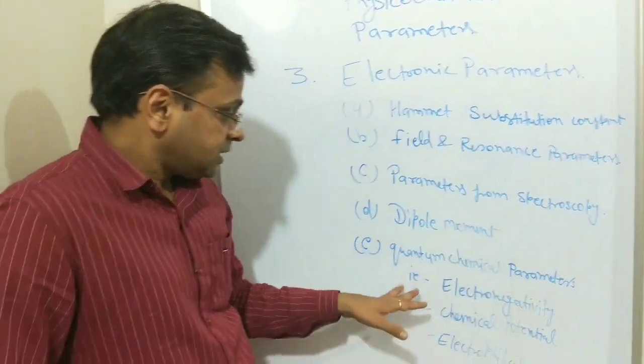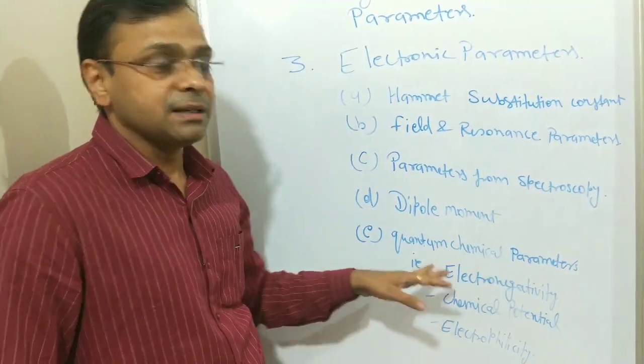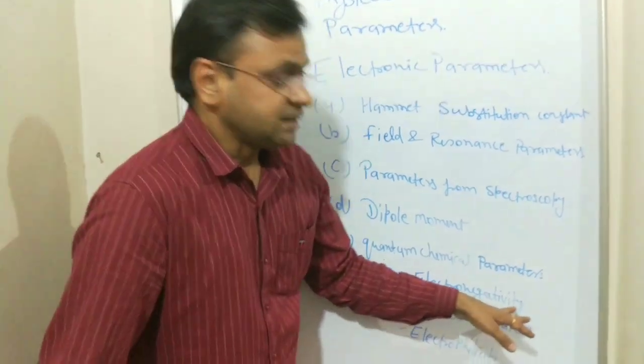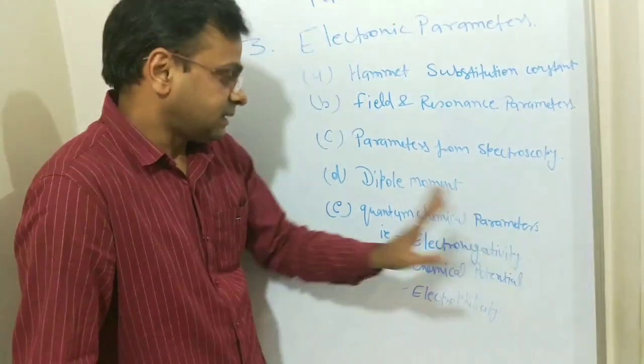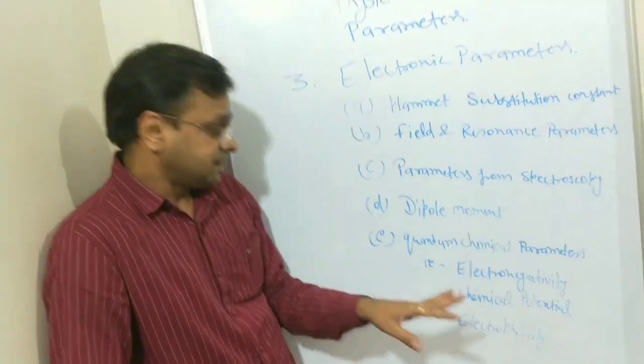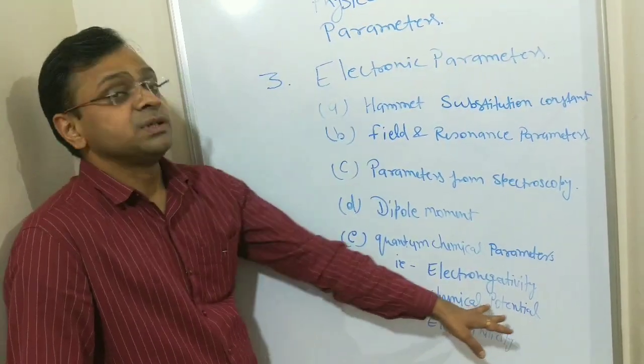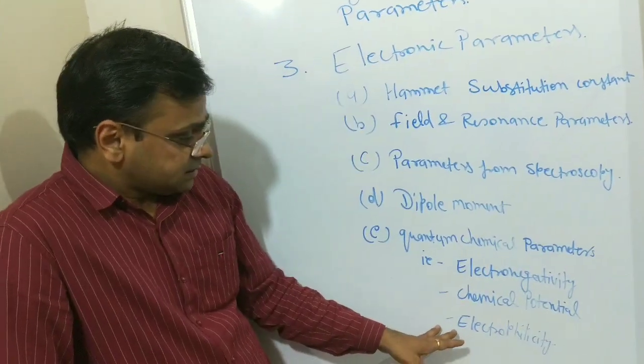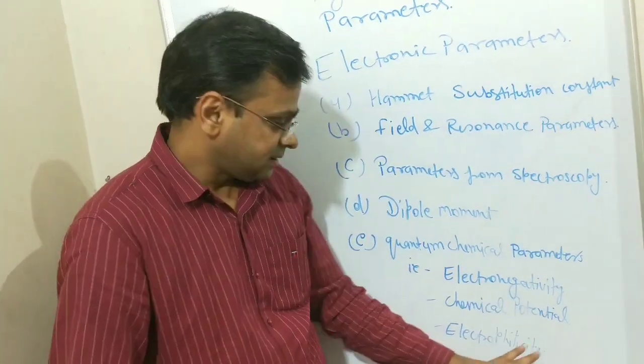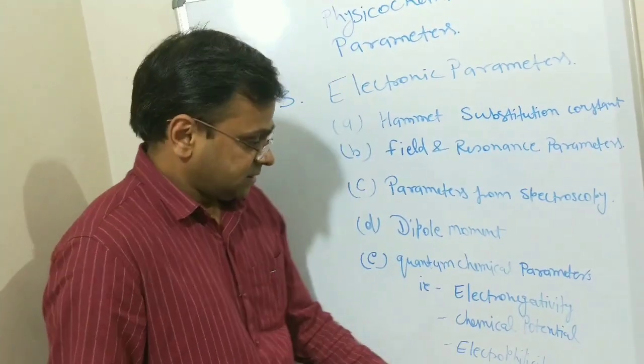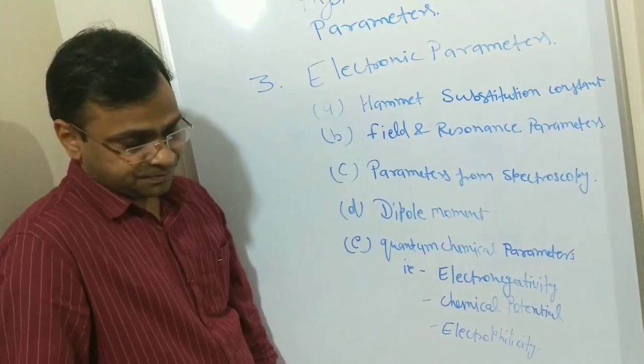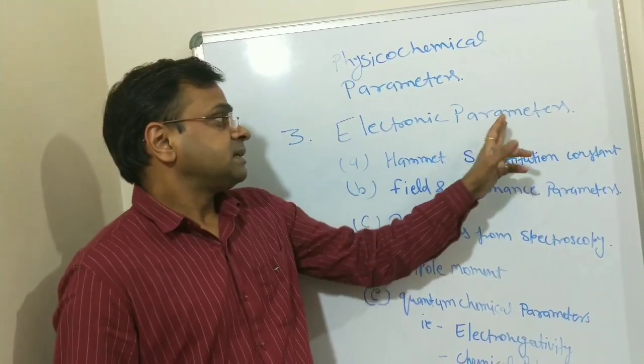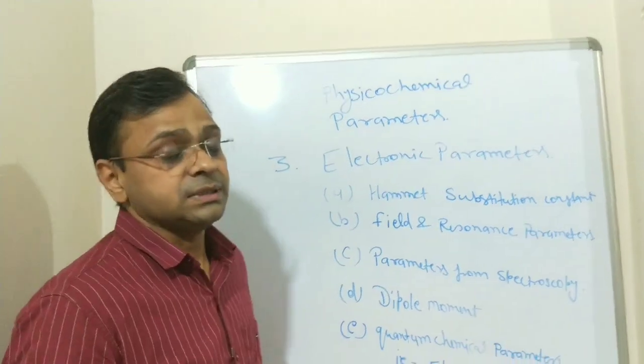Next is quantum chemical parameters. Quantum chemical parameters are the elementary parameters which we study in chemistry, like electronegativity, the power to attract an electron by an atom. The power of an atom to attract an electron is electronegativity. Second is chemical potential. We know better the electrochemical series. Next is electrophilicity. Electrophilicity, that is electron-loving nature, or you can say electropositivity. These are some parameters which incorporate as electronic parameters as physicochemical parameters used in QSAR studies.